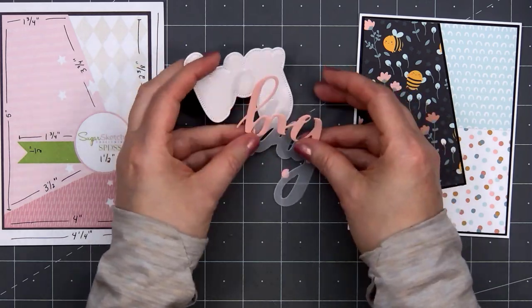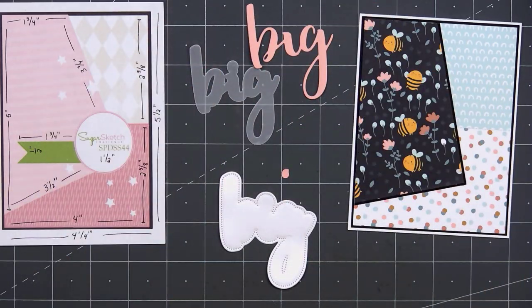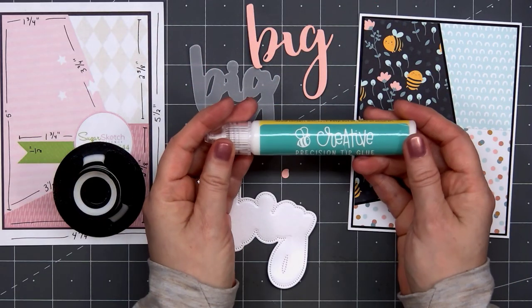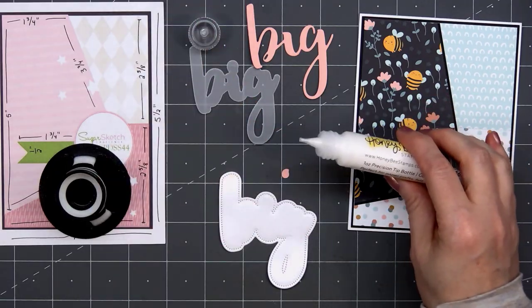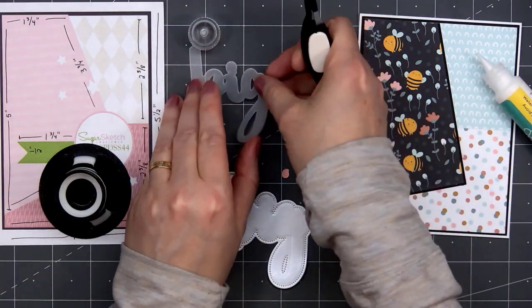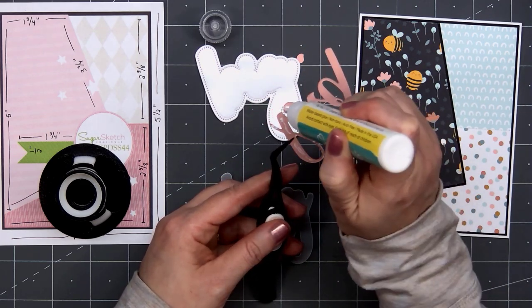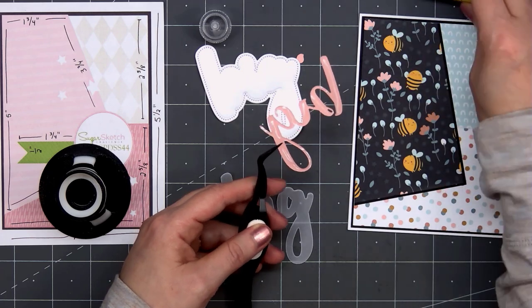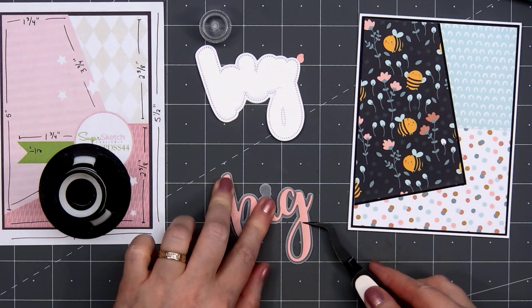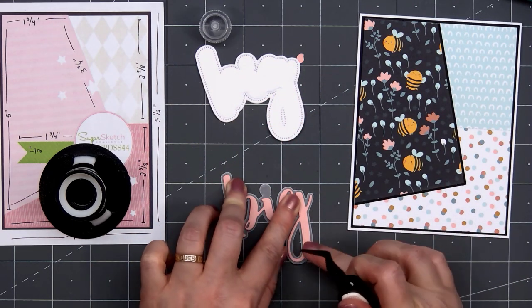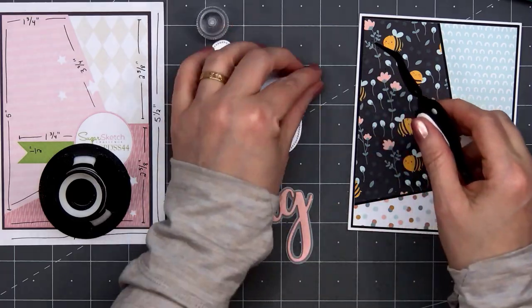It's an easy way to create this fun design for your card. For the sentiment on the card, I'm using the Big Buzzword Stamp and Coordinating Honeycut die set. I've already cut out the word big. I used a light pink for the main word. That first outline, I used some vellum, and then the very background with that pierced design, I used some white shimmer cardstock.